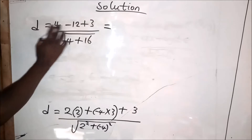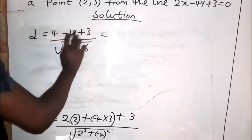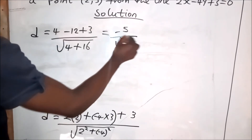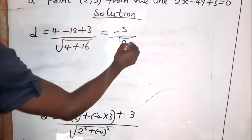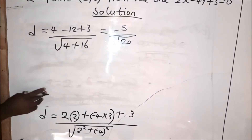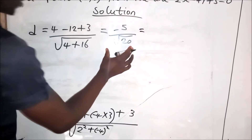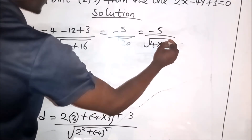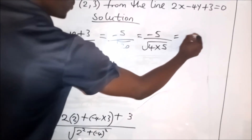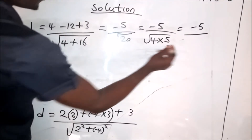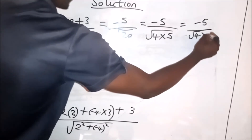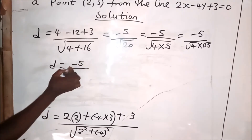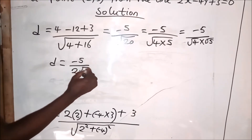Computing the numerator: 4 minus 12 gives minus 8, plus 3 gives minus 5. The denominator is square root of 20, which equals square root of 4 times 5, which simplifies to 2 root 5. So d equals minus 5 over 2 root 5.